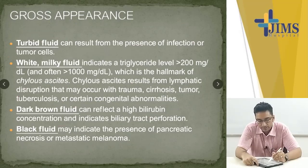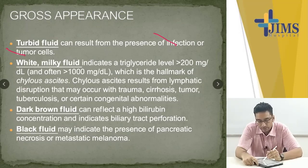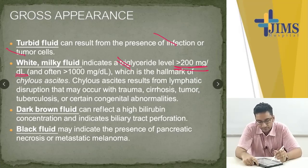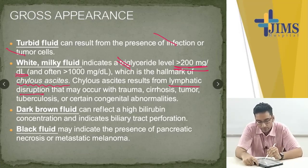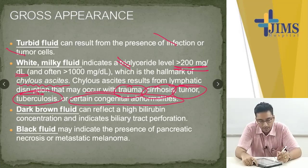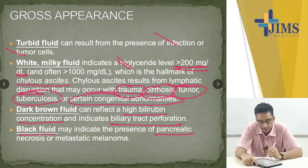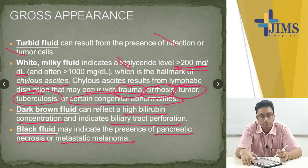Gross appearance of ascitic fluid: turbid fluid can result from infection or tumor cells. White milky fluid occurs when triglycerides are high — more than 200 mg per deciliter — and is the hallmark of chylous ascites, usually resulting from lymphatic disruption from trauma, cirrhosis, tumor, tuberculosis, or congenital abnormalities. Dark brown fluid indicates high bilirubin and biliary tract perforation. Black fluid is present in pancreatic necrosis or metastatic melanoma — very rare.